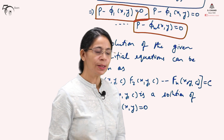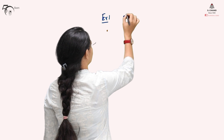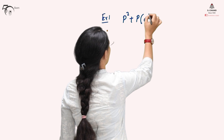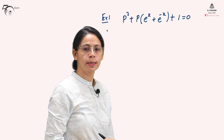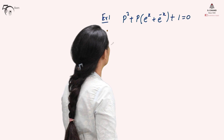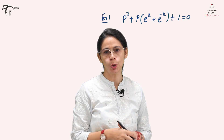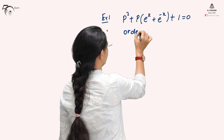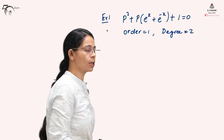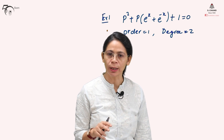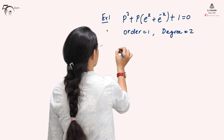Let us take one example to make this clearer. Consider the differential equation: P² + P·e^x + e^(-x) + 1 = 0. This is first order because it has P (dy/dx) only, and since the power of P is 2, the order is 1 but the degree is 2. Since it is of degree 2, we should get two linear factors — this is soluble for P.